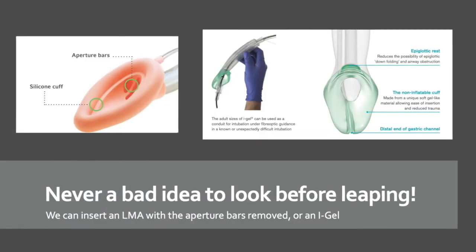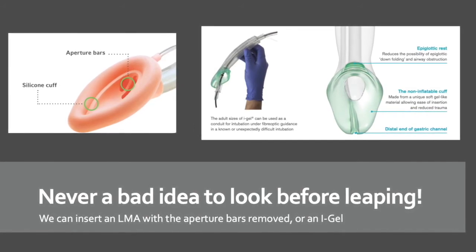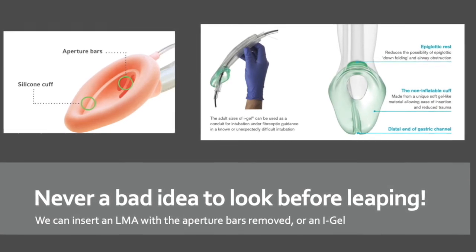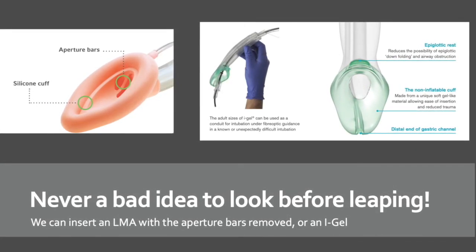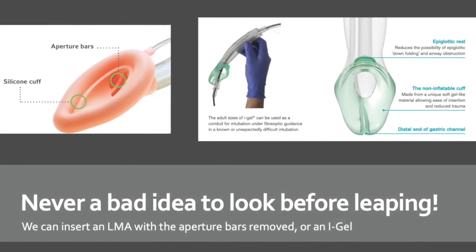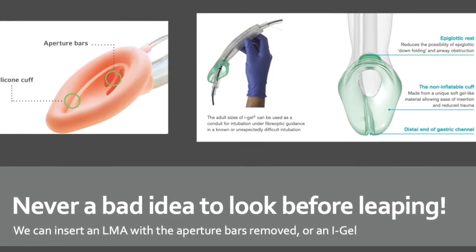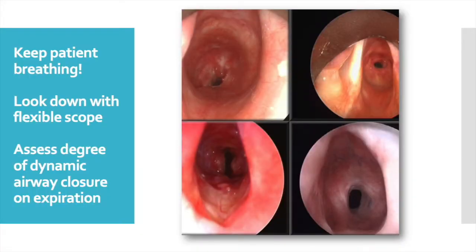Anytime you're not sure exactly what you're dealing with, it may be a very good idea not to intubate or paralyze the patient right away. Instead, consider keeping the patient spontaneously breathing and insert a supraglottic airway device. This can be an LMA with the aperture bars removed — which you can easily do with a small sharp scissors — or use an i-gel, which doesn't have any bars and will easily accommodate a fiberoptic bronchoscope and even an endotracheal tube. With your patient breathing, you can look down with the fiberoptic bronchoscope, evaluate vocal cord movement, and evaluate the degree of fixed or dynamic airway obstruction you've got to deal with — whether the airway opens more when the patient takes a breath and collapses when the patient exhales, or vice versa.